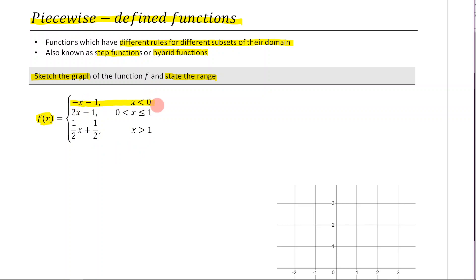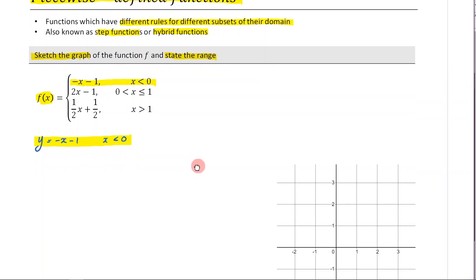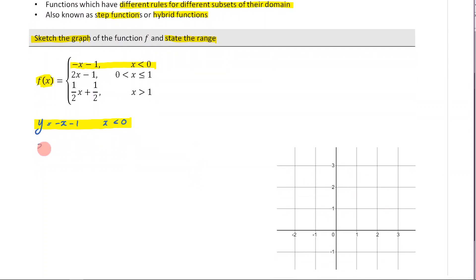Let's deal with our first rule. We're trying to sketch y equals negative x minus one, where x is less than zero. If you're having trouble picturing what this looks like, a very good first step is to find your x and y intercepts. You find your x intercept by letting y equal zero, which gives x equals negative one. Then find your y intercept, which occurs when x equals zero, giving y equals negative one.